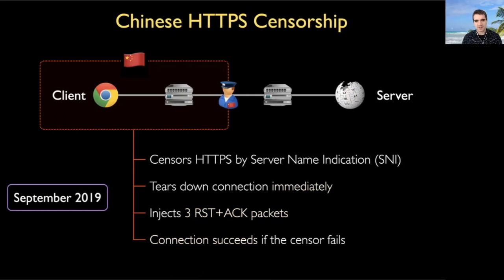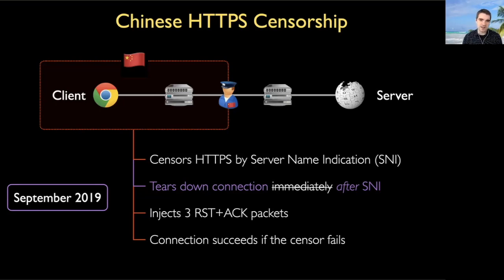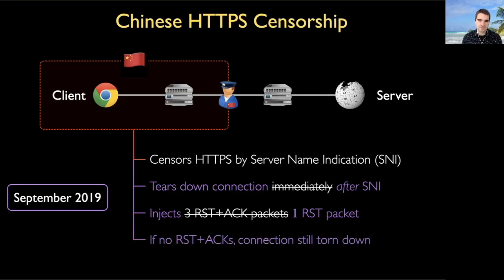Around September of 2019, we were studying China's HTTPS censorship. When we were trying to reproduce our results from a prior paper, we were noticing some strange things. Instead of getting censored immediately after sending the TLS client hello containing the forbidden SNI, we would see cases of teardowns happening deeper in the TLS handshake, well after the SNI packet. And instead of seeing three reset ACK packets, we only saw one single reset packet. And in cases when we didn't see any reset ACK packets at all, the connection was still getting torn down. At the time we didn't know what to make of this, but since we've improved our tooling, we've done additional experiments.